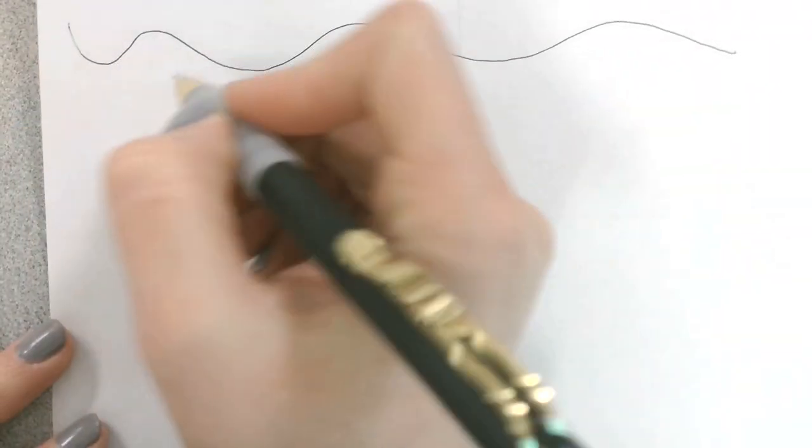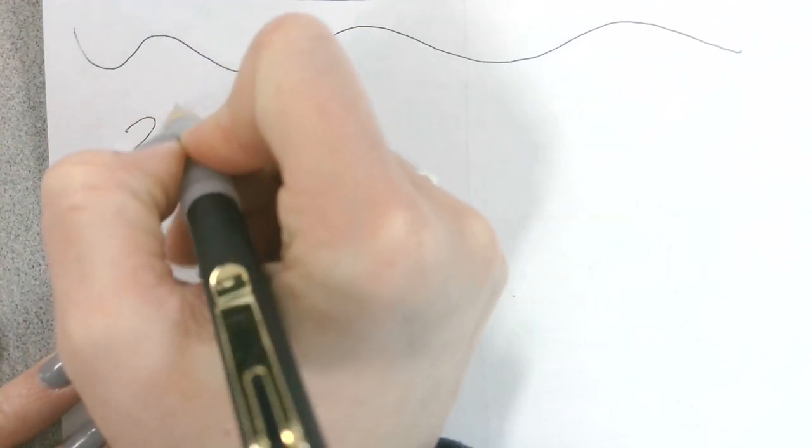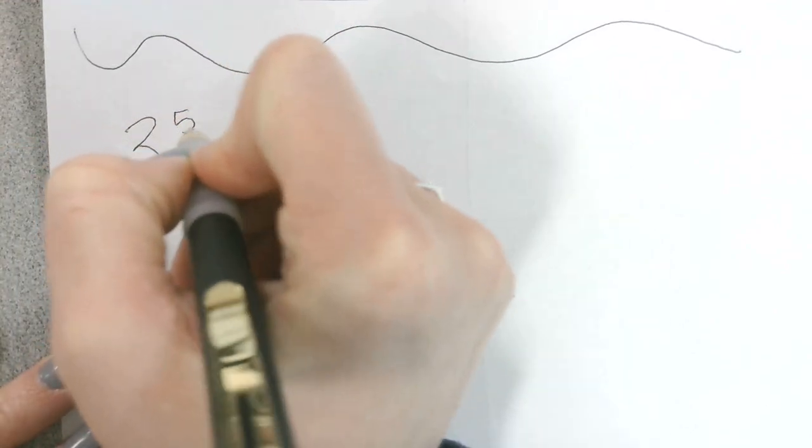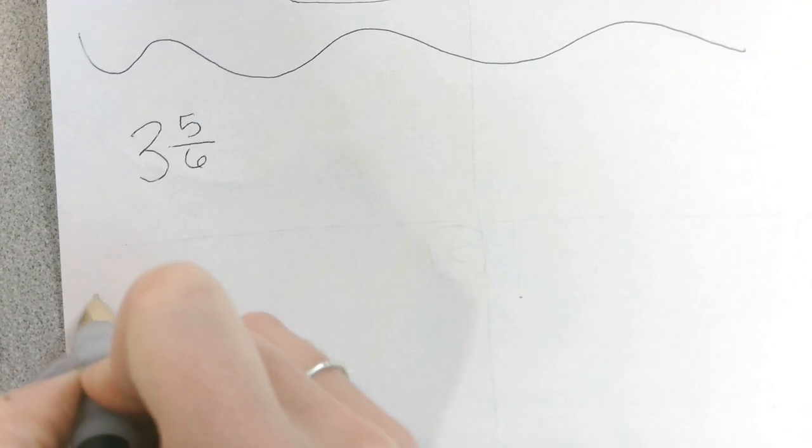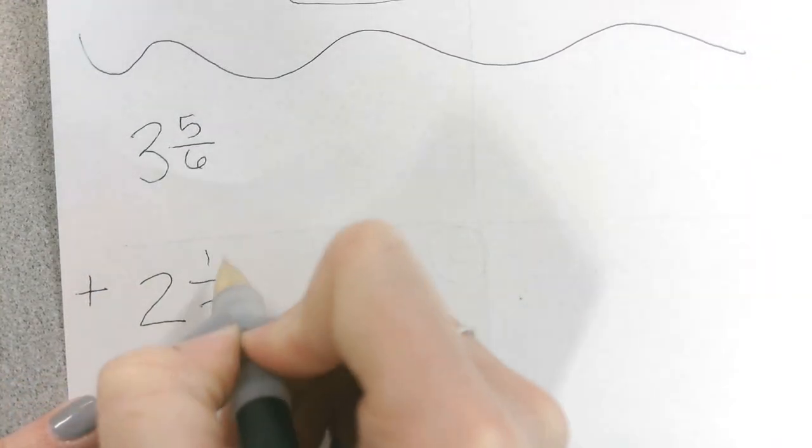Let's try adding mixed numbers. So the problem that I want you to write down is 3 and 5 sixths plus 2 and 1 half.